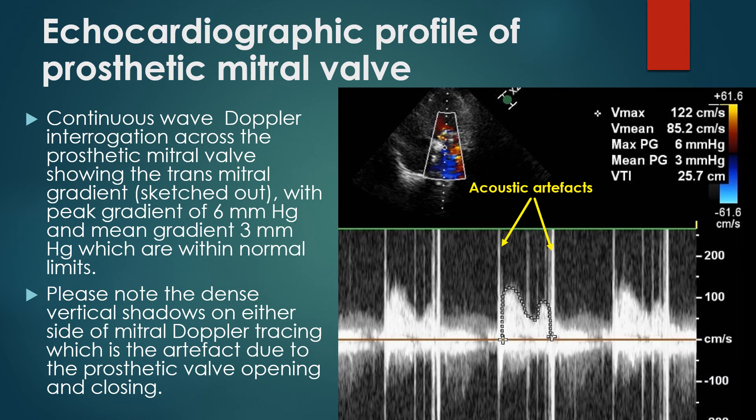Continuous wave Doppler interrogation across the prosthetic mitral valve shows the transmitral gradient with a peak of 6 mmHg and a mean of 3 mmHg, which are within normal limits. Please note the dense vertical shadows on either side of the mitral Doppler tracing, which are artefacts due to the prosthetic valve opening and closing.